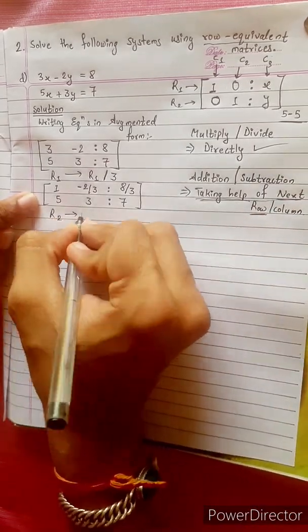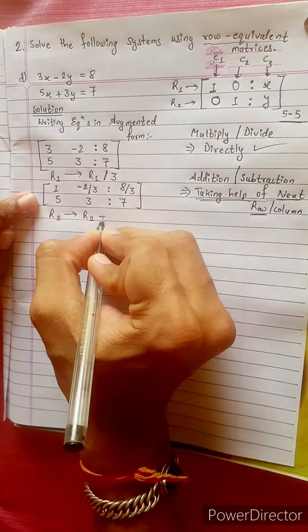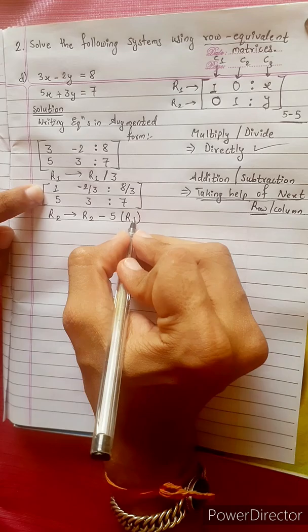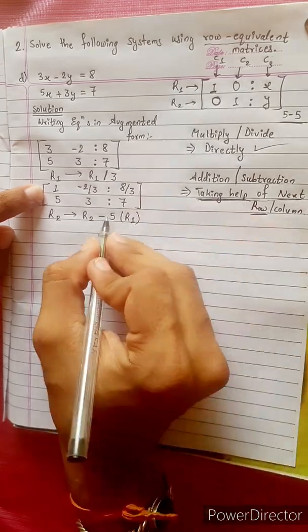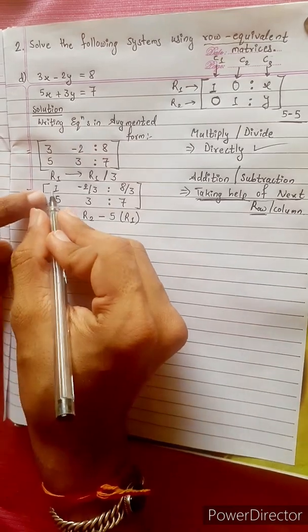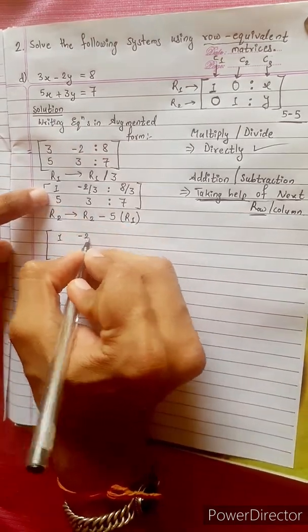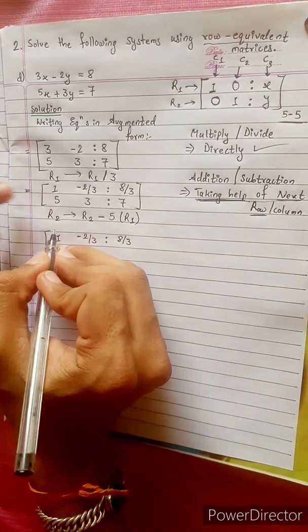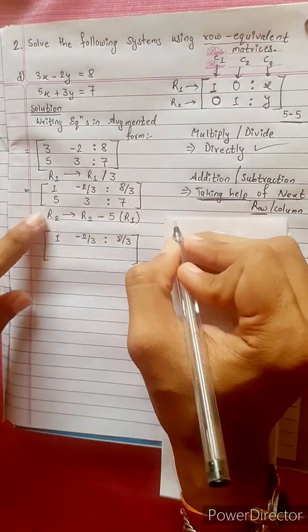R2 change into R2 minus 5 times R1. This will be R1 to R1. R1 is the same as 1 minus 2 by 3 is to 8 by 3. This will be R2, R2 is the same as 5.